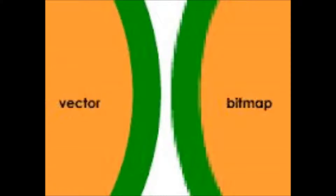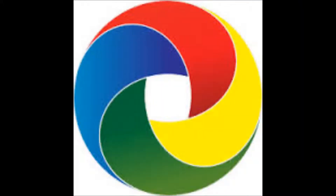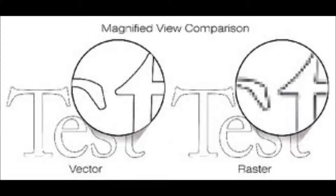The main difference between these two types of graphics, vector and raster, is that vector graphics are made up of lines represented, behind the scenes, by XML code containing mathematical equations. These equations determine the size and the shape of the object, making it scalable without distorting the resolution of the picture.